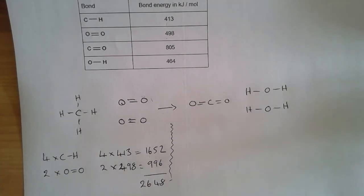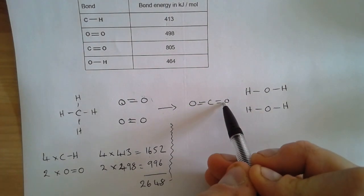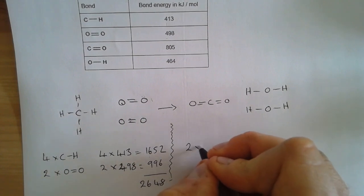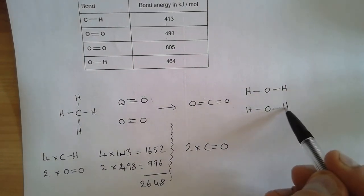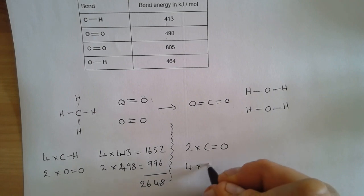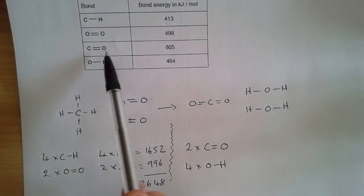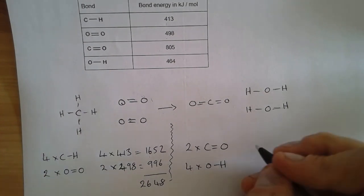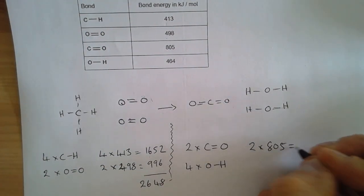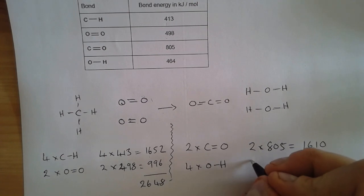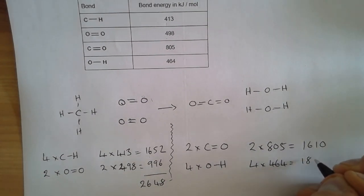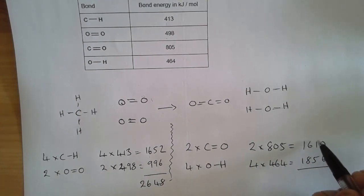Let's do the same thing for the product. So we've got a carbon to oxygen double bond here and a carbon to oxygen double bond here, so two times C double bond O's. And then up here we've got one, two, three, four oxygen to hydrogen bonds. And these are the pieces of data given to us here. So two times 805 for the carbon to oxygen double bonds is 1610, and then four times 464 is 1856, which means that the total energy released making these bonds is 3466.